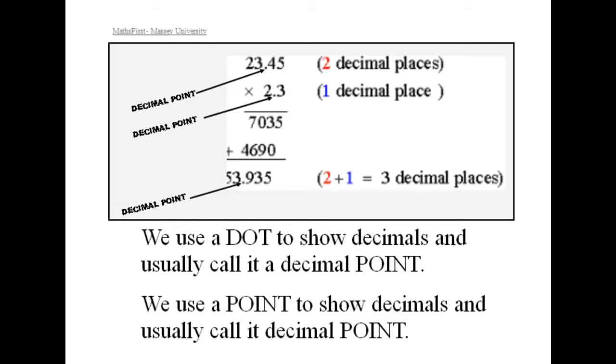We use a dot to show decimals and usually call it a decimal point. We use a point to show decimals and usually call it a decimal point.